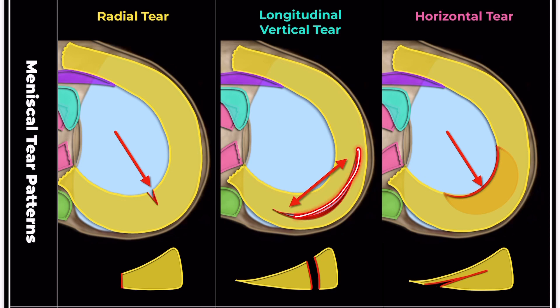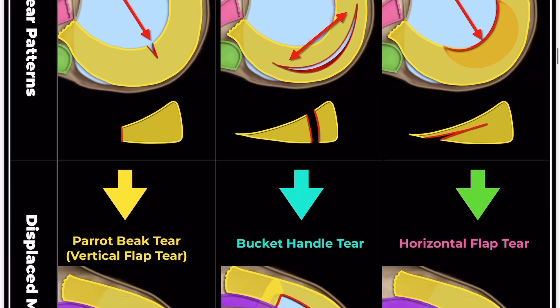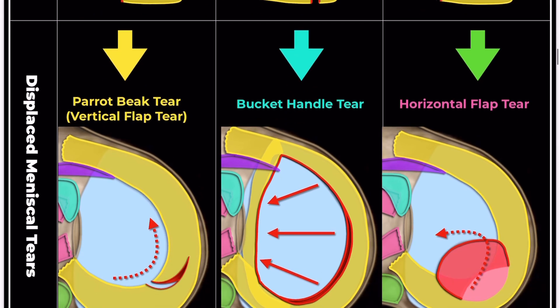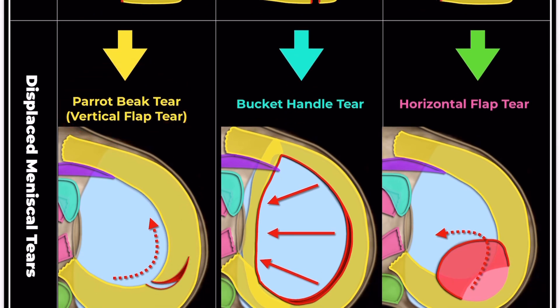Unlike horizontal or radial tears, pure longitudinal tears don't reach the meniscus's free edge. If a longitudinal tear extends to the free edge, it's classified as a vertical flap tear.